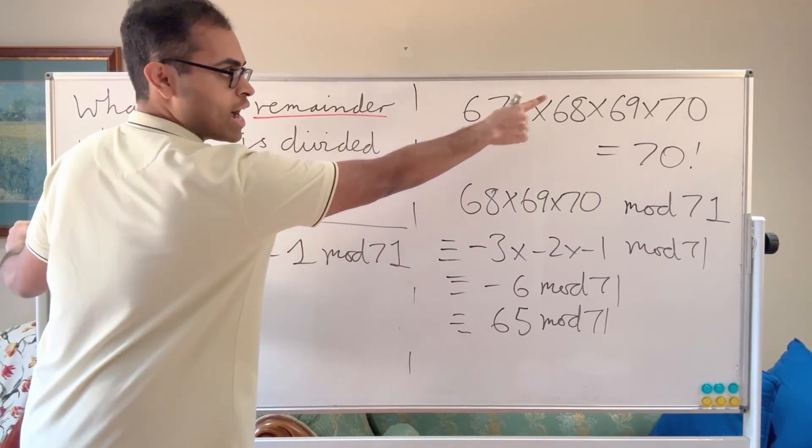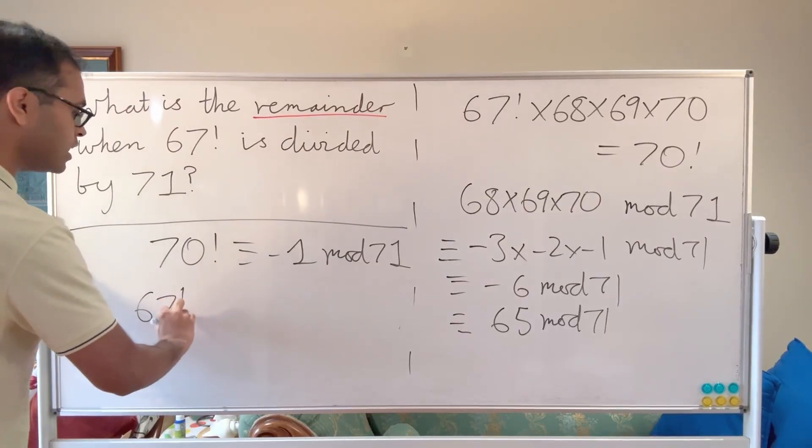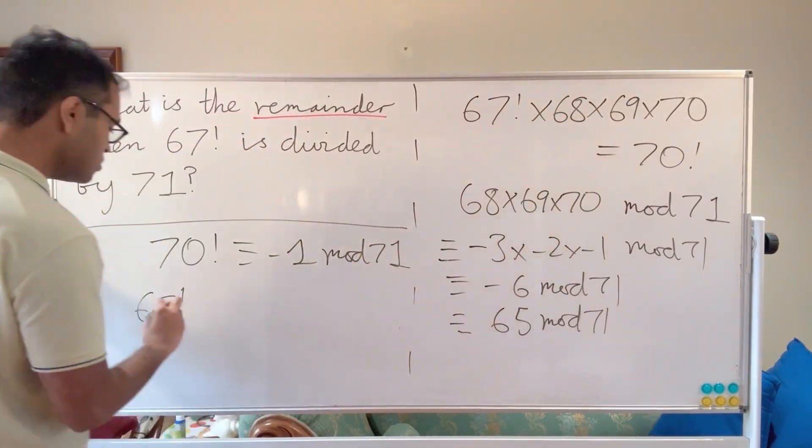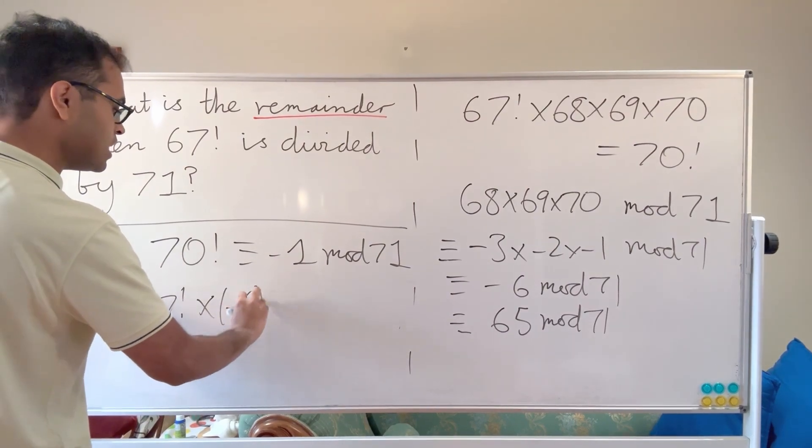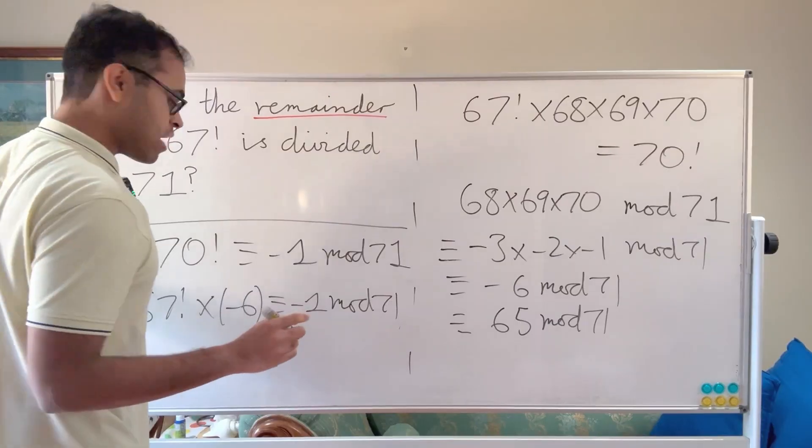67 factorial times 68 times 69 times 70. So 67 factorial times that product—68, 69, 70—is just minus 6. So 67 factorial times minus 6 is going to be congruent to minus 1 mod 71. Now we're getting somewhere.